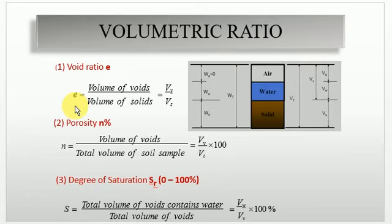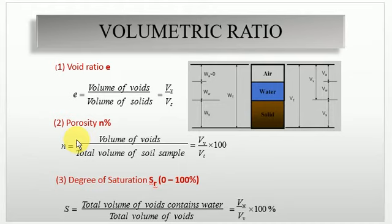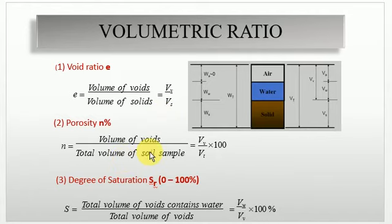The next equation is porosity, denoted by small n. Porosity is the ratio of volume of voids to the total volume of the soil sample, multiplied by 100 to express as a percentage. So the basic difference between void ratio and porosity is: void ratio is Vv over Vs, while porosity is Vv over Vt into 100.